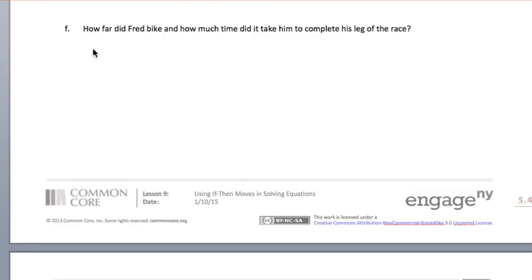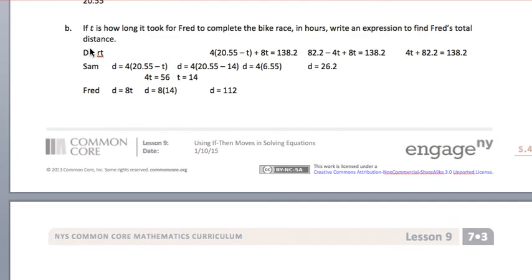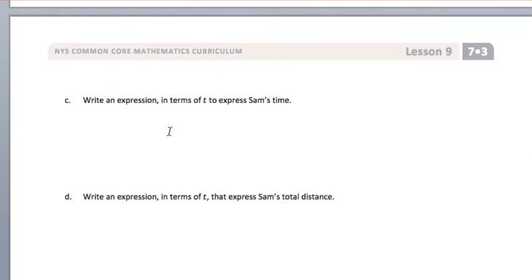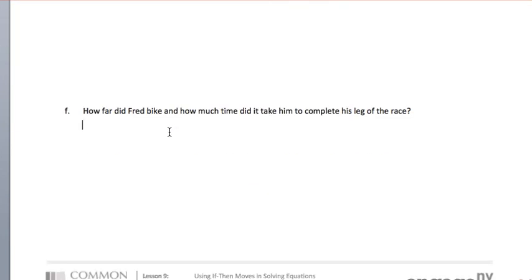Now in question F, they asked how far did Fred bike and how much time did it take him to complete his leg of the race? Well, we know that Fred biked 112 miles. So we found that out up above. His time was 14 hours and his rate was 8. So 8 times 14 was 112 miles. 112 miles in 14 hours.